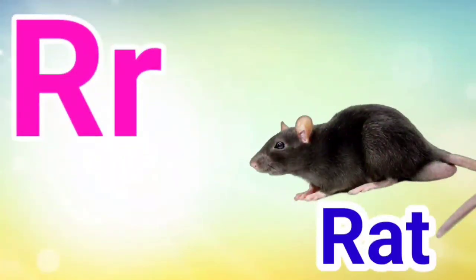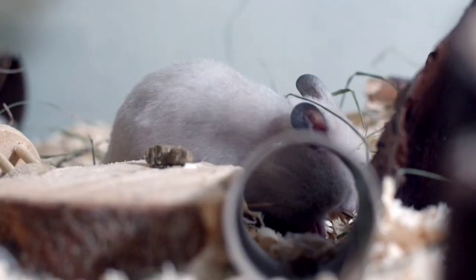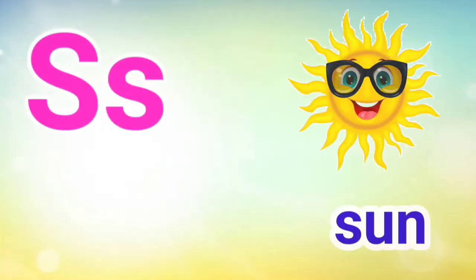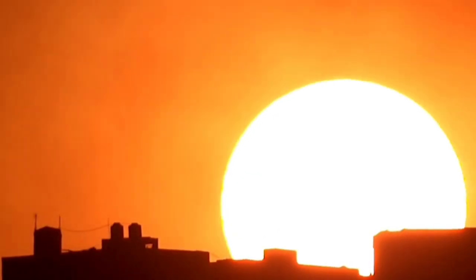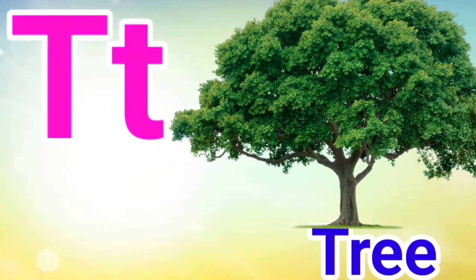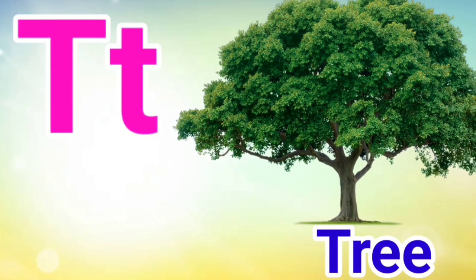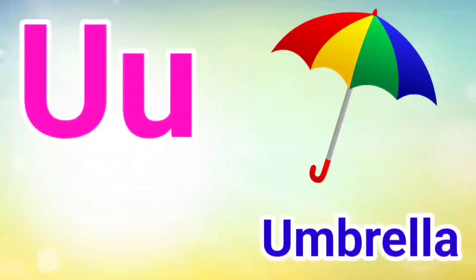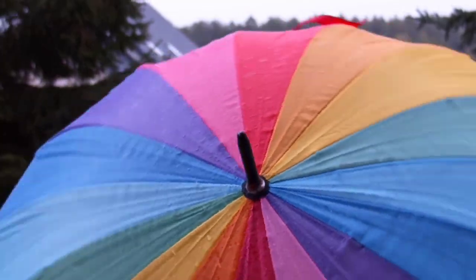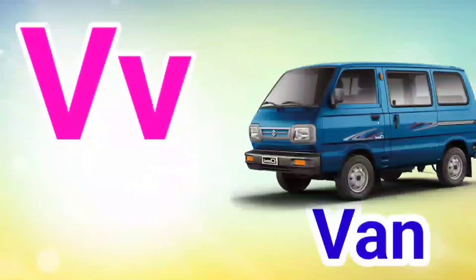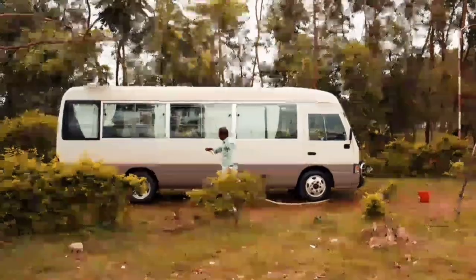R for Rat, S for Sun, T for Tree, U for Umbrella, V for Van.